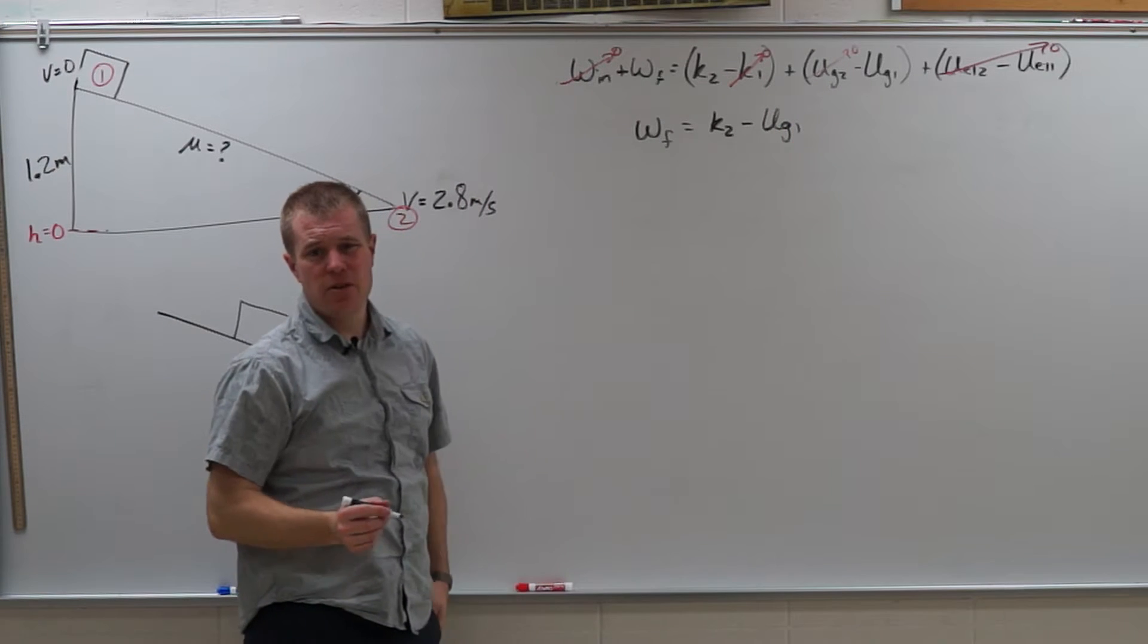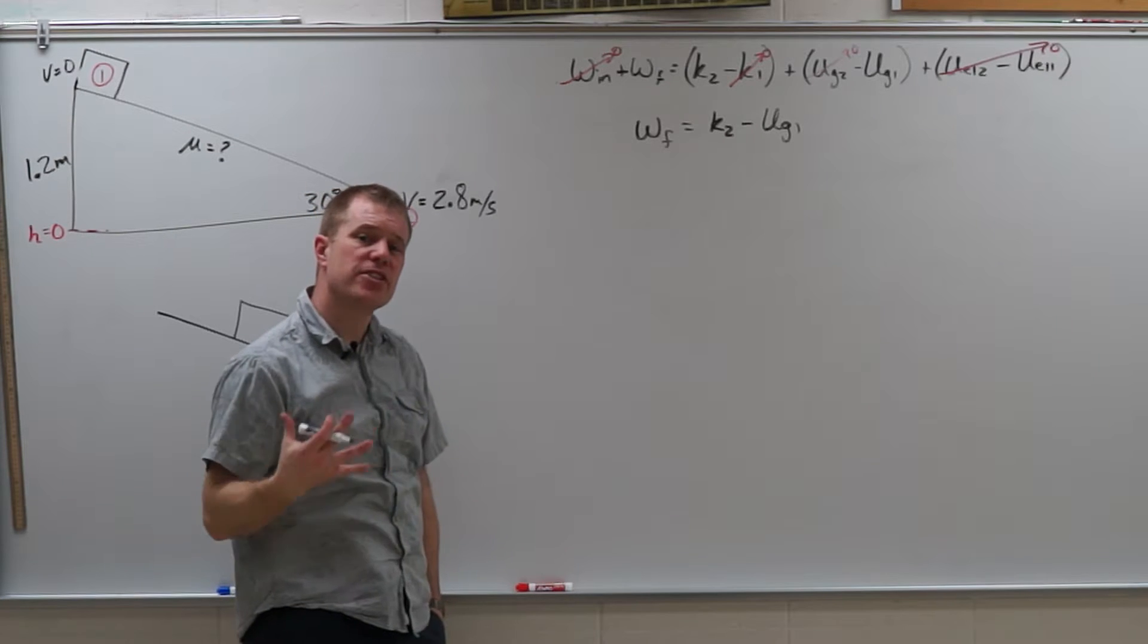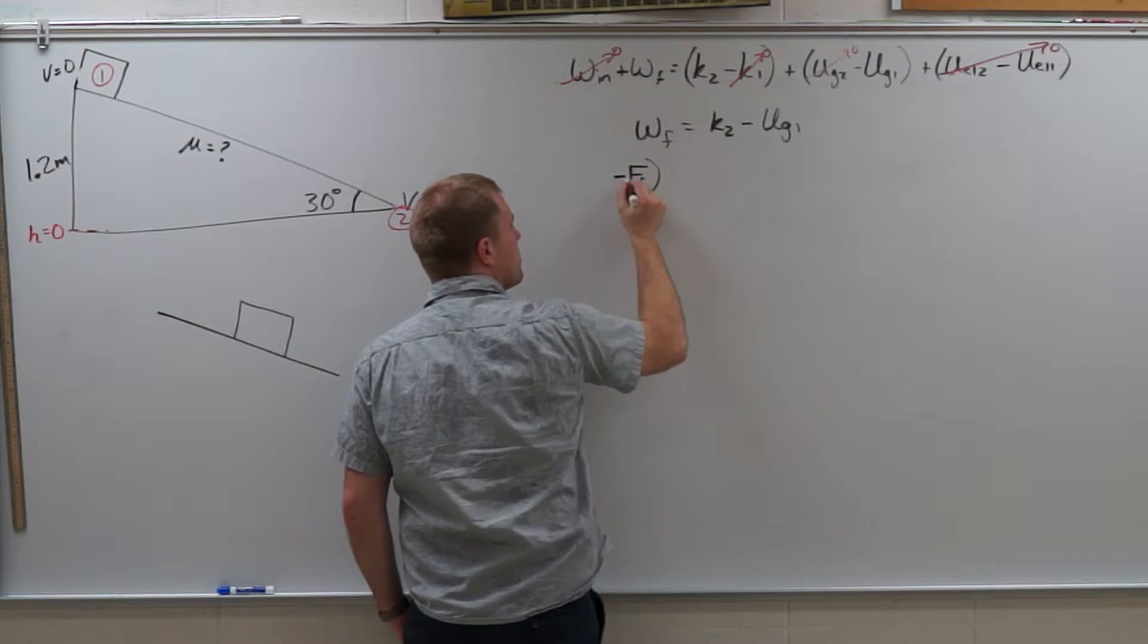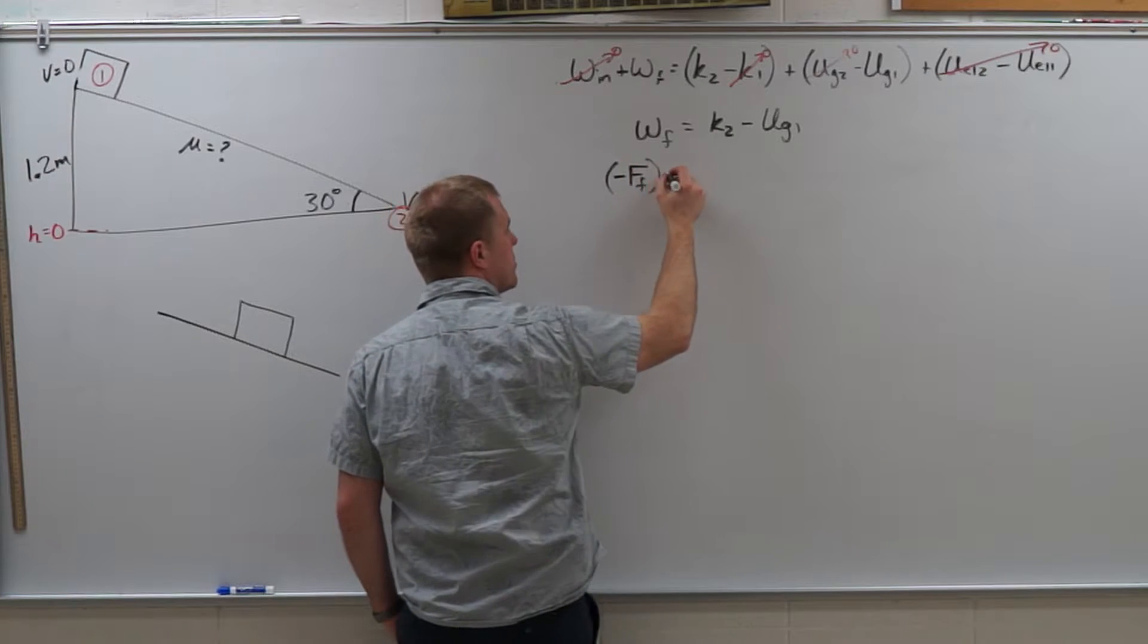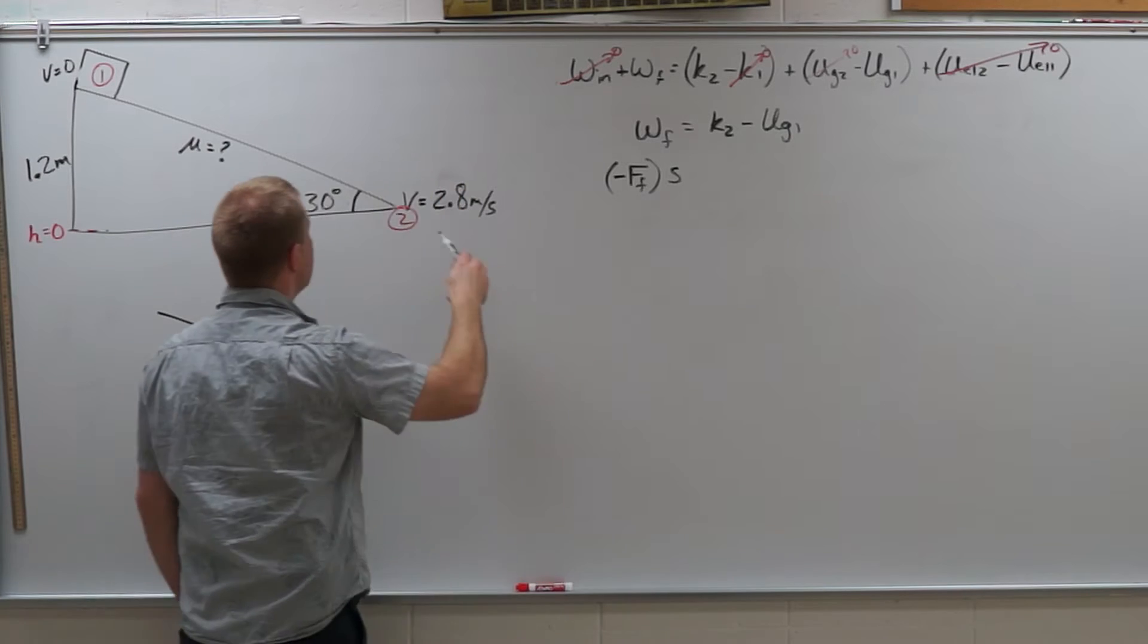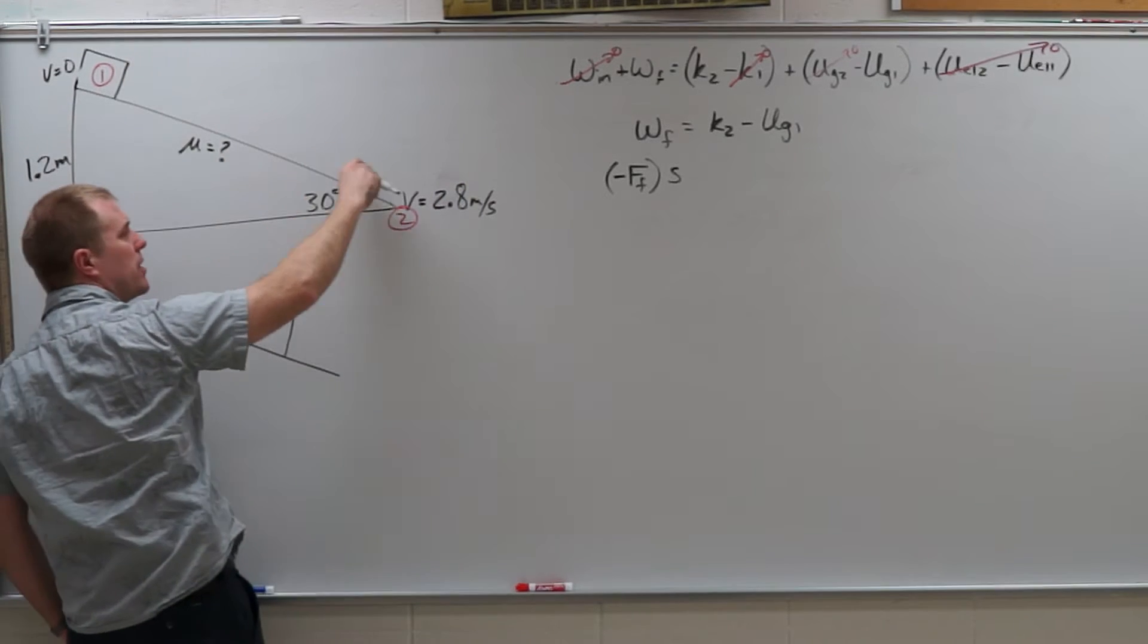Because we're not solving for any of those energies or works, we're going to substitute in. So work done by friction is negative force of friction, because remember these are directions that we're concerned about here. I have to have the negative sign on there because the force of friction is opposite the direction of the displacement.